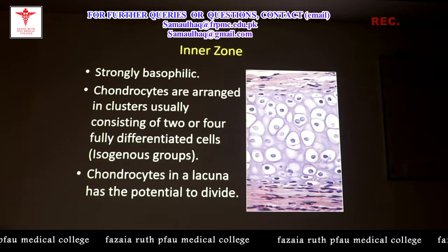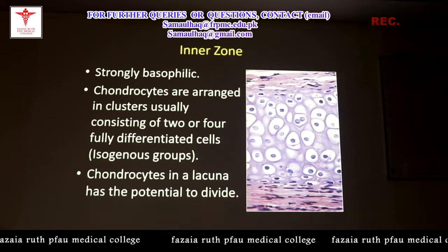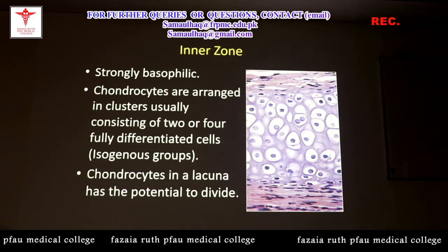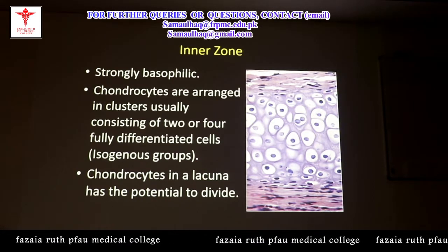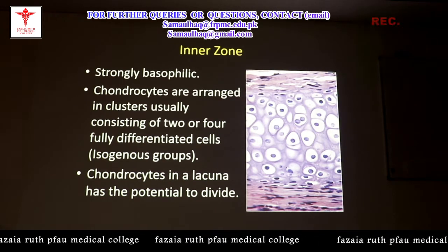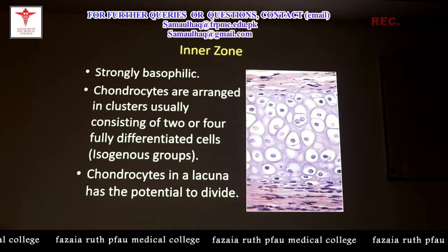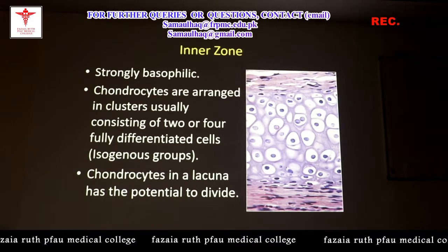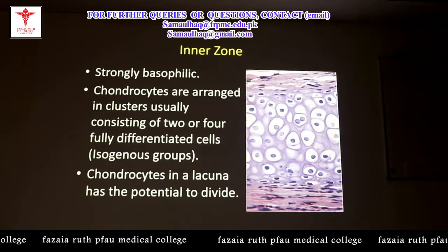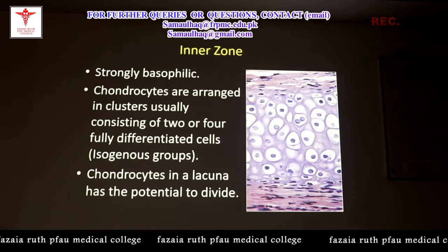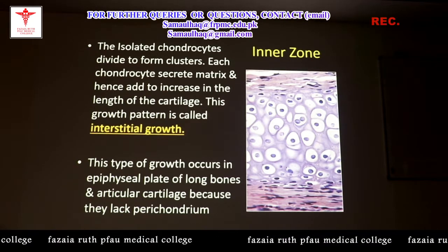The inner zone is strongly basophilic, appearing purplish or bluish in color. The chondrocytes are arranged in clusters, usually consisting of two or more — up to four — fully differentiated cells. These groups of cells are named isogenous groups. The inner zone contains groups of cells clustered together, named isogenous groups, present in lacunae spaces which also have the potential to divide mitotically.